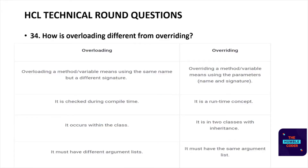The next question is: how is overloading different from overriding? These are C++ concepts. Overloading means using the same name but a different signature, and is checked at compile time, occurring within the same class with different argument lists. Overriding means using the same name and same signature, is checked at runtime, occurs between two classes with inheritance, and must have the same argument list.